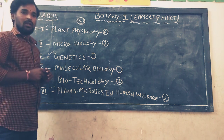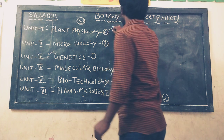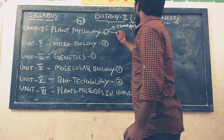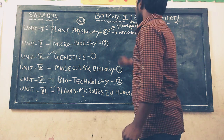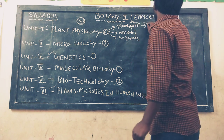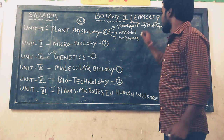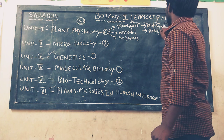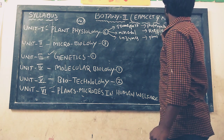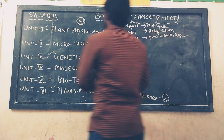Let us see a brief discussion of the 2nd year Botany syllabus. In plant physiology, the first chapter is transport in plants, the second is mineral nutrition, the third is enzymes, the fourth is photosynthesis in higher plants, the fifth is respiration in plants, and the sixth is plant growth regulators.